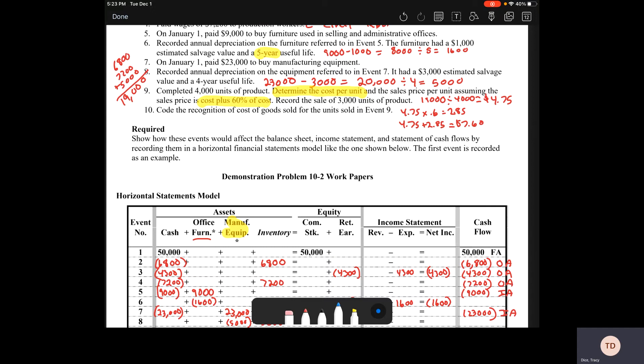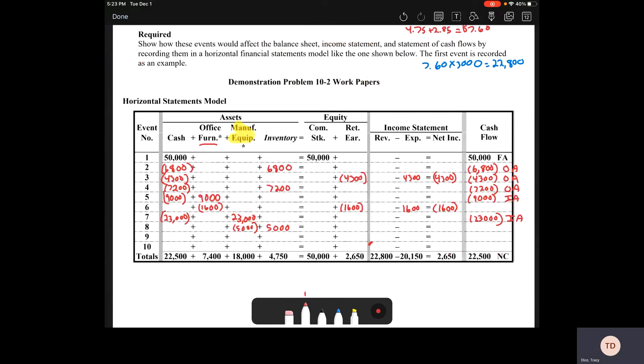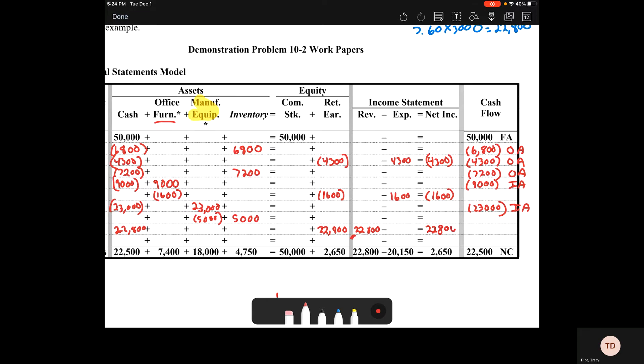We want to record the sale of the 3,000 units first. We're not dealing with the cost of goods sold yet. That's on number 10. So we take that $7.60 times our 3,000. This is the revenue, what we're bringing in. When we do that, we should get $22,800. We have to go record that down here as our revenue. So $22,800. That's also going to go under our retained earnings. That's our revenue, and we're bringing that in as an operating activity.